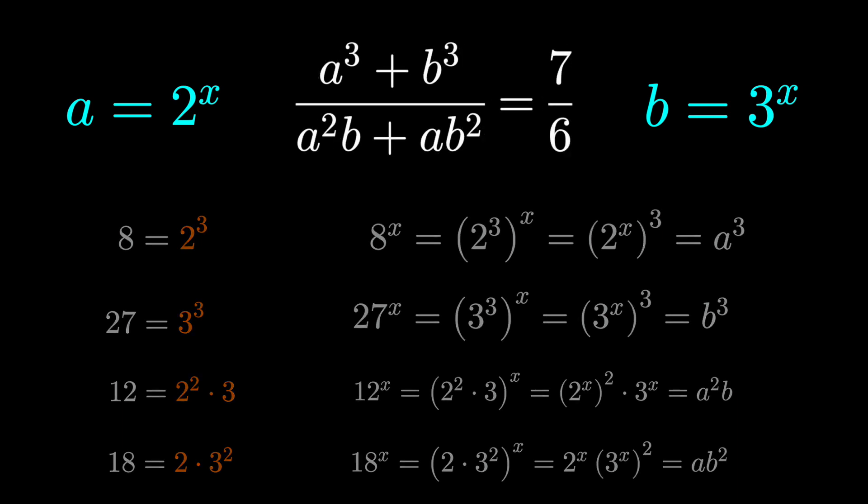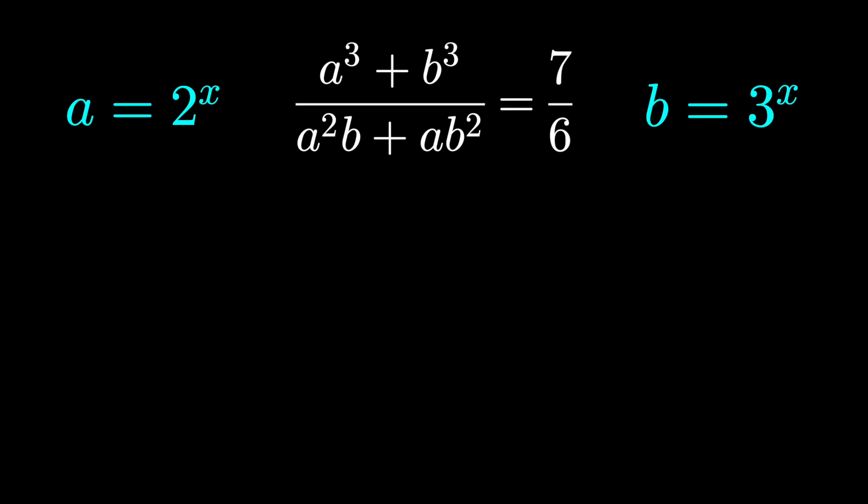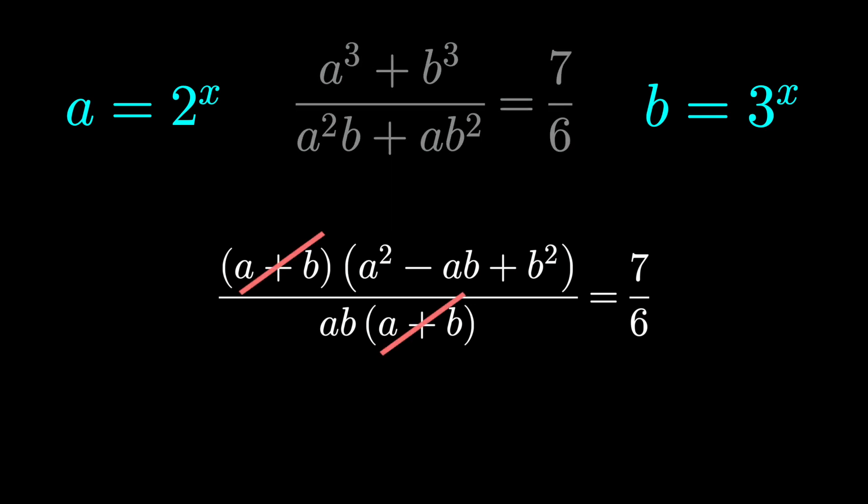I hope you remembered your sum of cubes formula because that's exactly what we have in the numerator. This is a plus b times a squared minus ab plus b squared. We can go ahead and cancel a plus b. Double check that a plus b isn't 0. That's true because 2 to the x plus 3 to the x is never 0 for all real values of x.